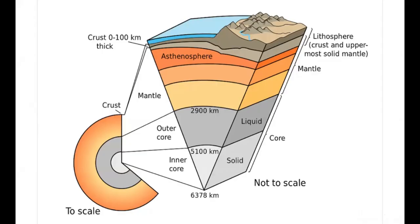Beneath the crust is the mantle, which is divided into the upper mantle, asthenosphere, and the lower mantle. The upper mantle, made out of solid bedrock, contains most of the Earth's mass. The crust and the upper mantle make up the lithosphere, which is rigid, hard, and makes up the tectonic plates at about 100 kilometers thick. Beneath the lithosphere is a soft layer called the asthenosphere, where temperature and pressure are so high that rocks melt. The lower mantle extends from a depth of about 660 kilometers down near the base of the mantle, and is more rigid than the upper mantle.